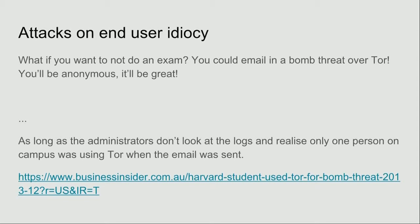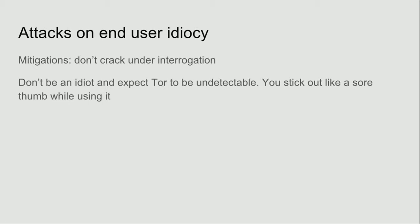Attacks on end-user idiocy — these are the funny ones. Like, what if you don't want to sit an exam, so you just send a bomb threat over Tor so you don't get caught? Then you get out of your exams, and the FBI comes — because they don't like bomb threats. And the administrators are just looking at the logs: 'who was using Tor at the time of the bomb threat? Oh, it was that one guy in that dorm — we might go have a talk with him.' You can't just use Tor and say 'I'm anonymous, no one can find me.' You stick out pretty bad while using it. The mitigation here is: don't crack under interrogation, because just using Tor alone isn't enough to put you in prison. But this guy got interviewed by the FBI, they knocked on his door, and he just said 'yeah, I'm sorry.' So don't talk to the police.